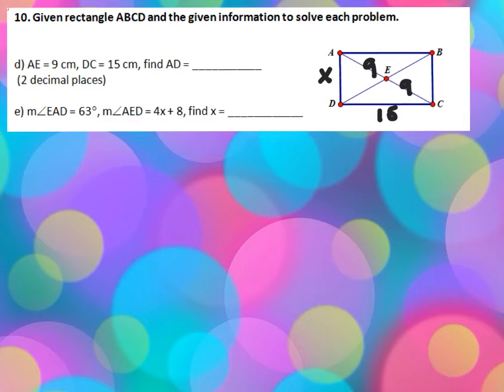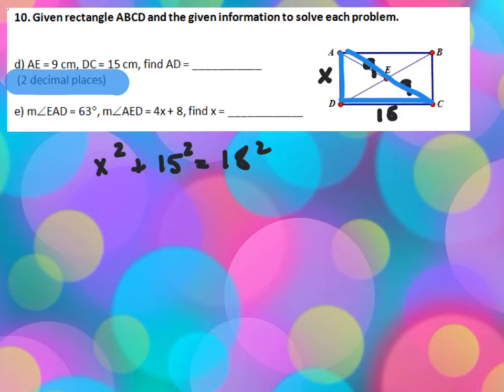Well, this immediately lends itself to a nice right triangle Pythagorean relationship that would say x squared plus 15 squared equals 18 squared. And from the looks of it, at least by this notation, we expect decimals in this problem.